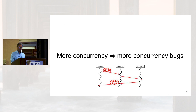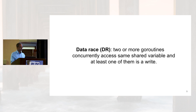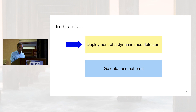More concurrency can lead to more concurrency bugs. Of specific interest to us is data races, which in Go happen when two or more GoRoutines concurrently access the same shared variable, and at least one of them is a write. In the rest of this talk, I will first explain the deployment of a dynamic data race detector for our Go code, and then describe some of the common data race patterns in Go that we discovered.